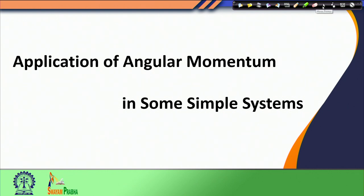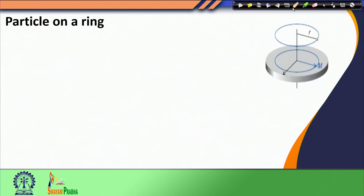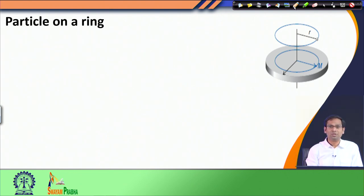Our first example that we will be dealing with is the so-called particle on a ring. You remember we discussed the particle in a box problem, where the particle was confined to a one-dimensional box, and later we extended it to two-dimensional and three-dimensional boxes. This is somewhat similar; however, instead of having a linear translational motion, here the particle is on a ring and is showing rotational motion — that is the key difference.